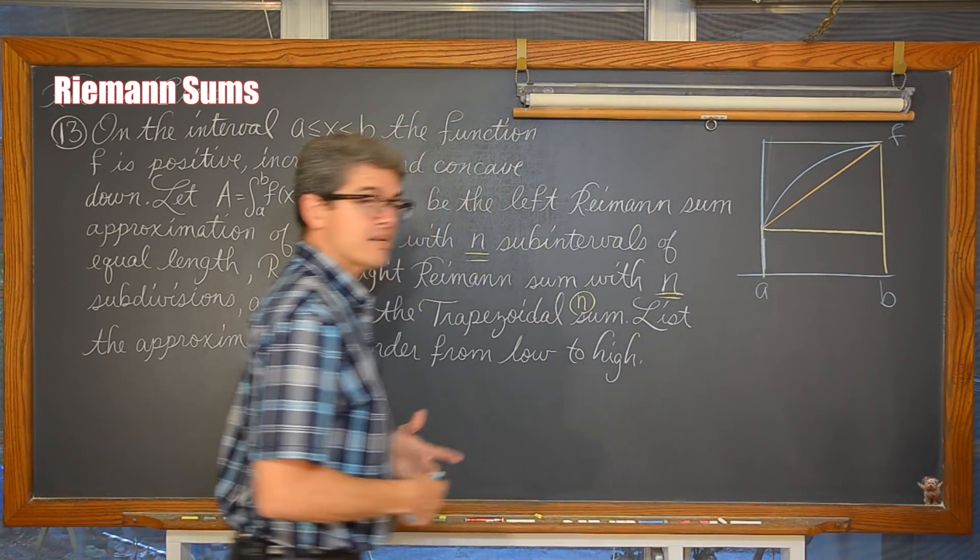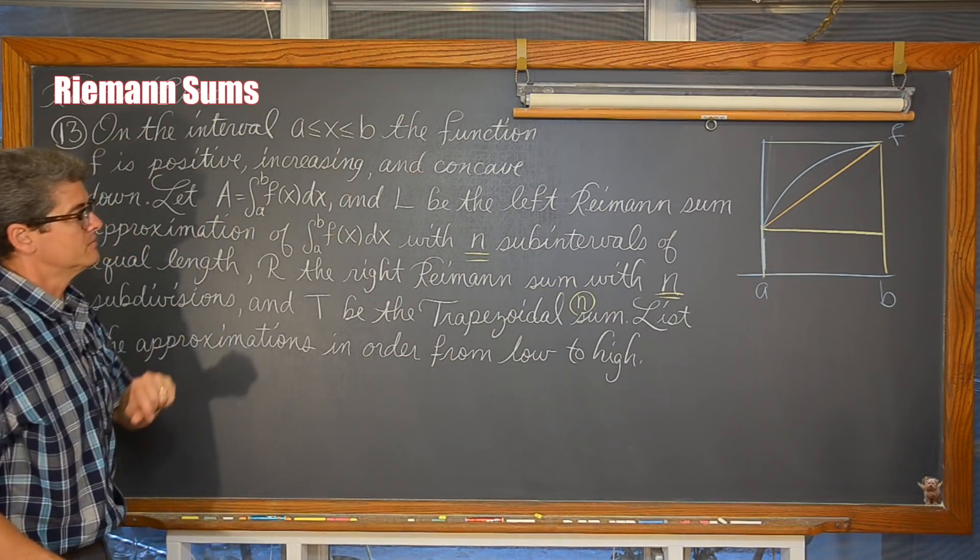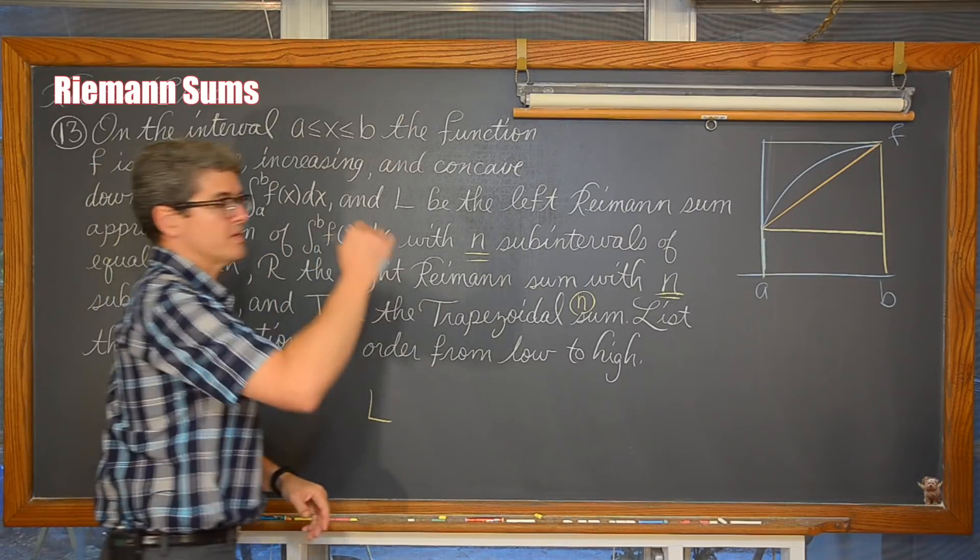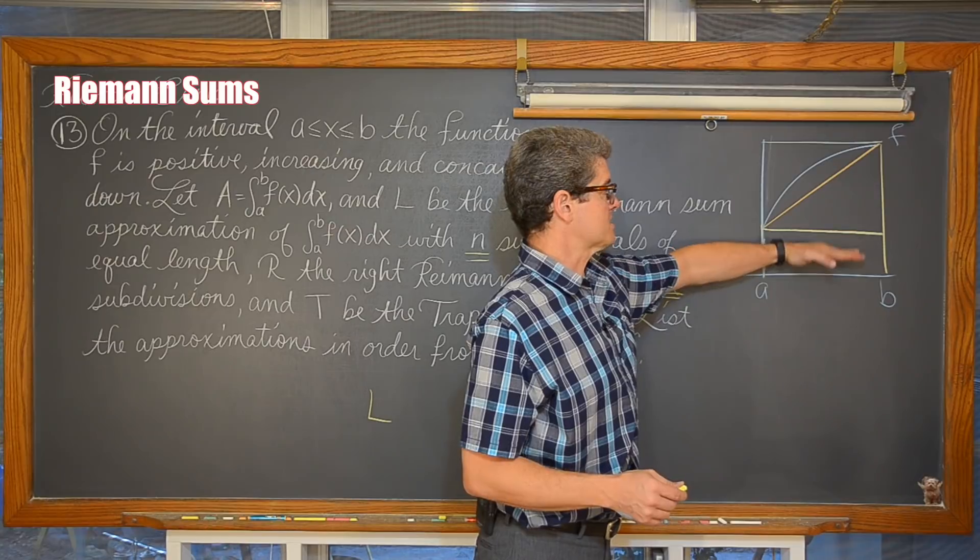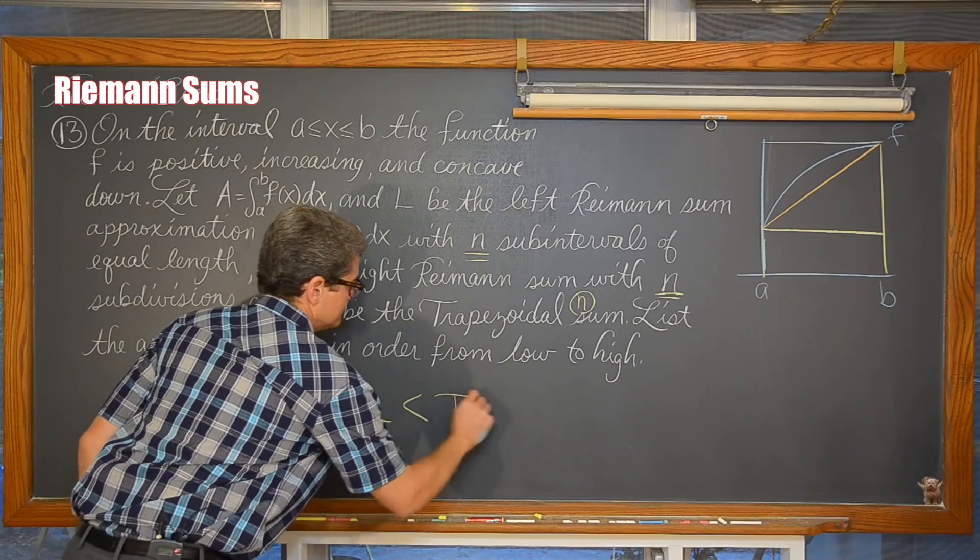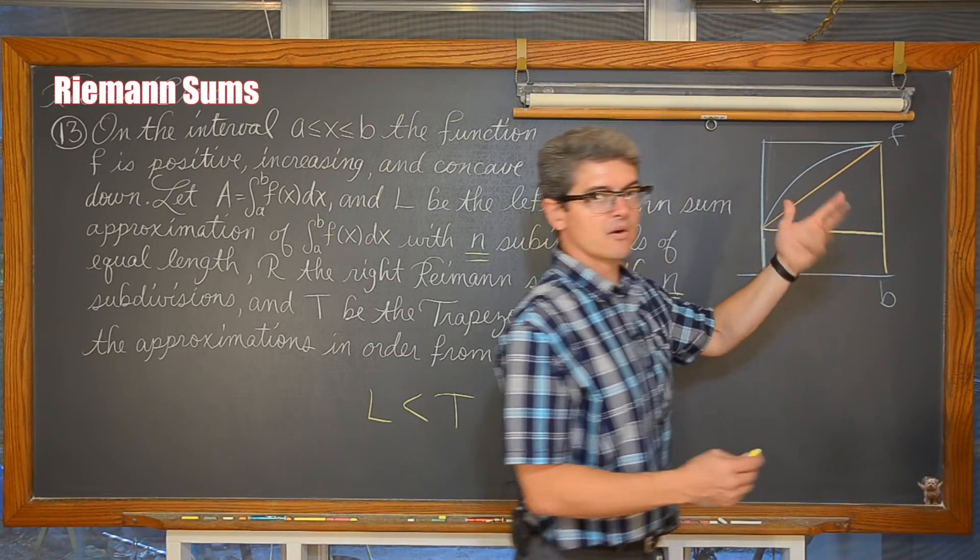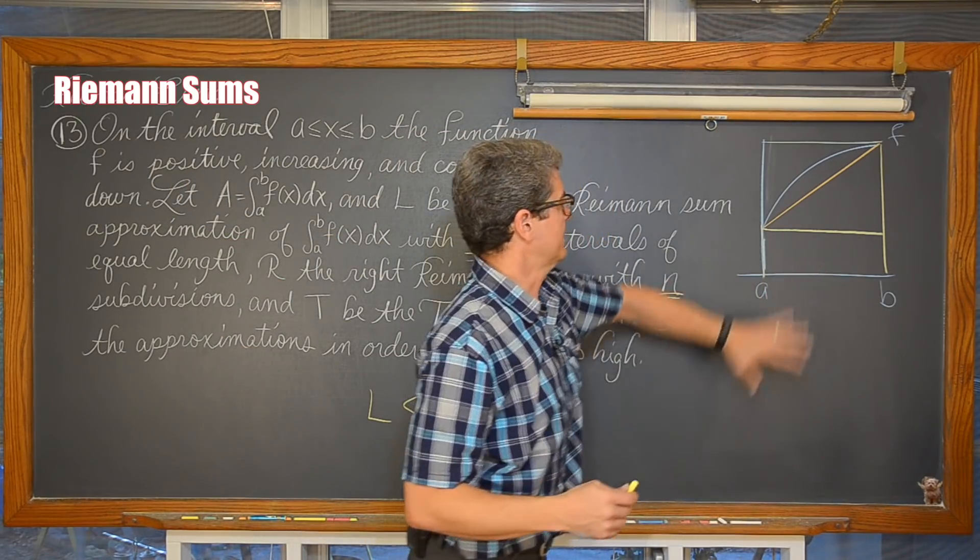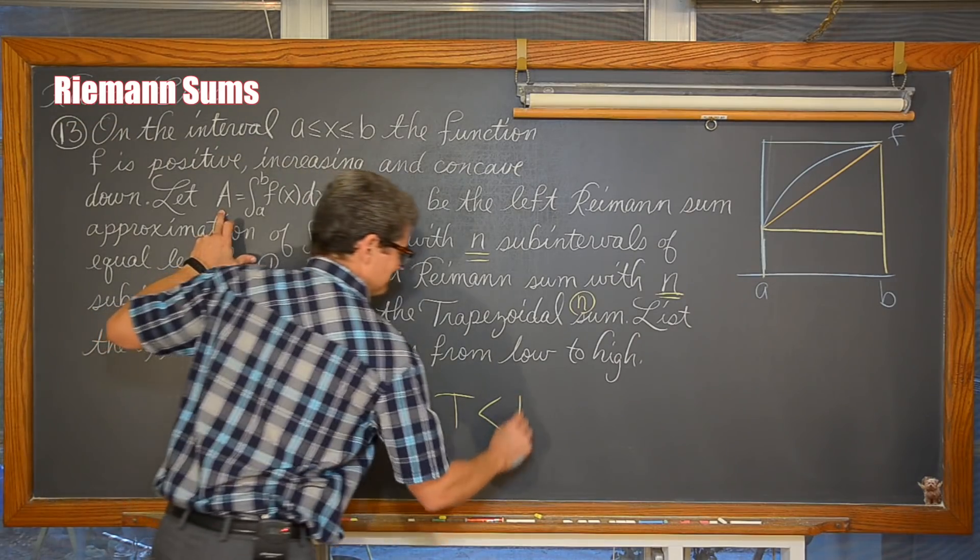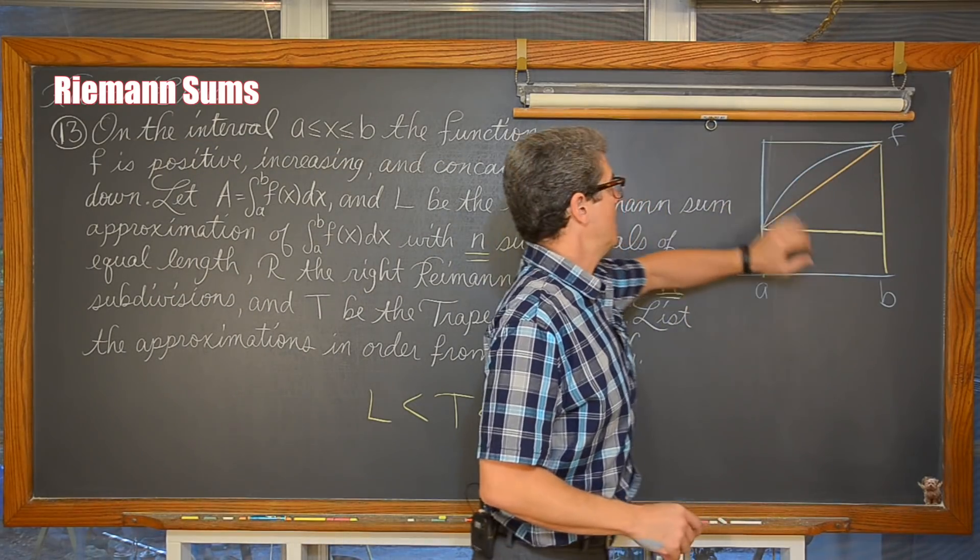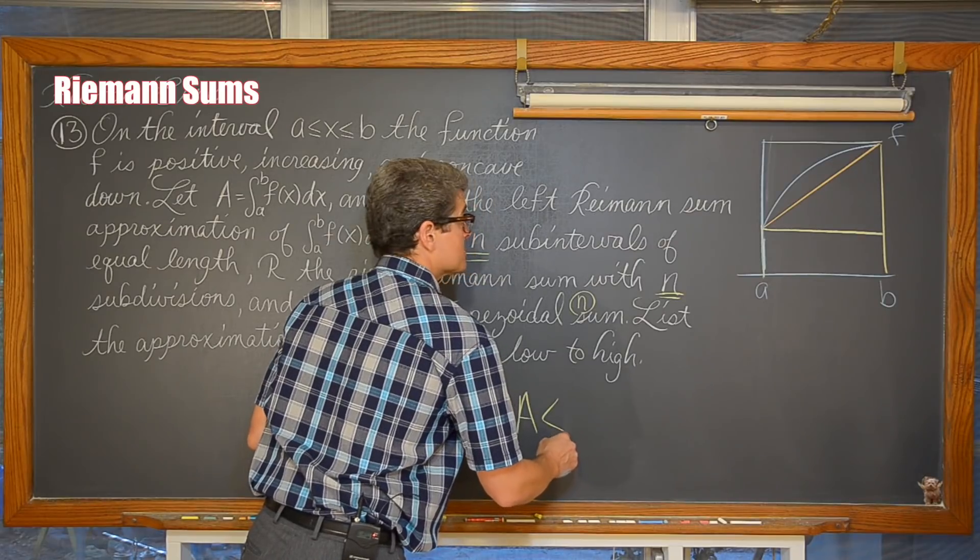We can just look at this sketch here and list our values from low to high. What is going to be the lowest estimate of this actual definite integral? Well, we can see it was a left end point since it was increasing. Then a little bit larger than that, we have got that one sub-interval which is a trapezoid. The area underneath this trapezoid would be more than the area of this rectangle. Then we have the actual area bound between f and the x-axis between a and b. I can say area because we are guaranteed that function f is positive. Of course, we know definite integrals don't have to be just area. Then, because that function is increasing, the right end point rectangular Riemann sum is going to overestimate that definite integral. So, we have r.